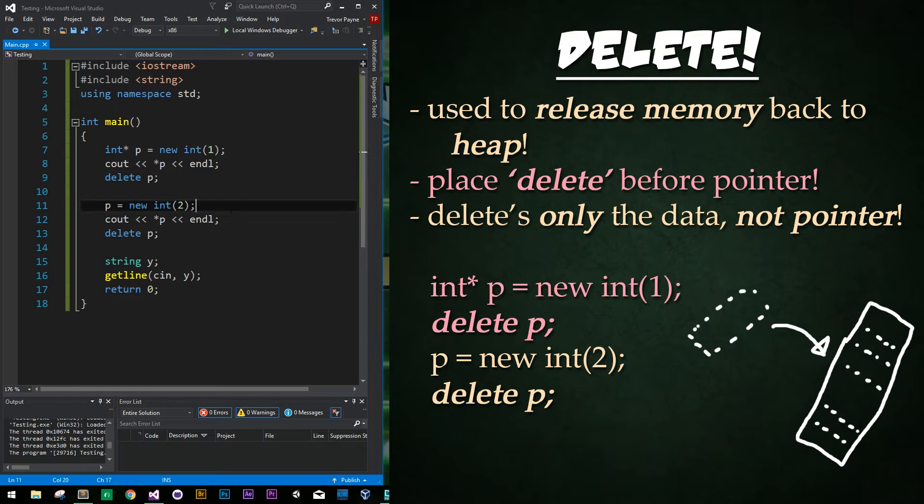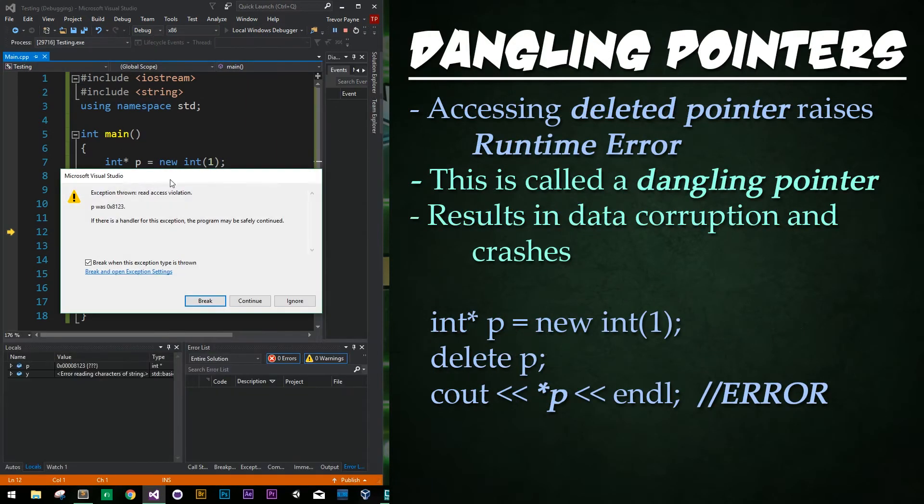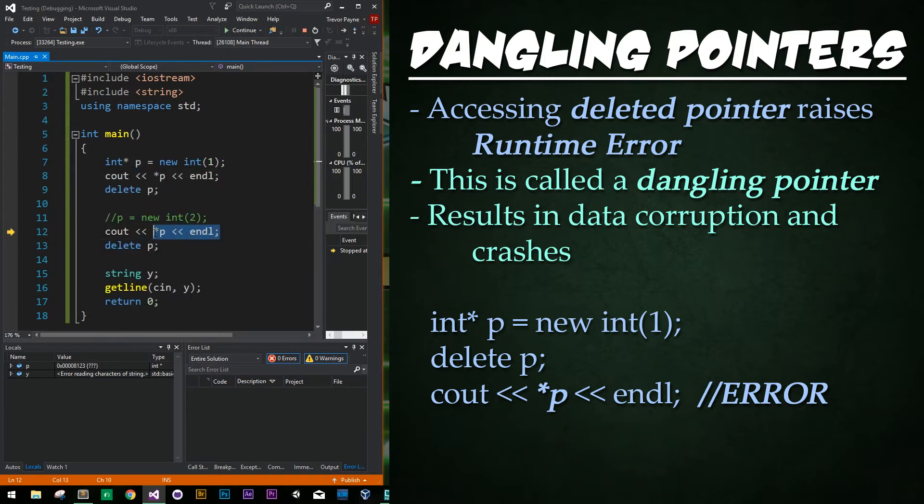Now what do you think happens if we instead comment out this line 11? Now we no longer have p being set to a new value but the instance is being deleted from memory. What do you think is going to happen? Let's save our program and run it. Now we will have a runtime error saying that there is a read access violation. Basically what's going on is we're trying to grab a value at memory that is no longer allocated off the heap with the value. So it's throwing an error.